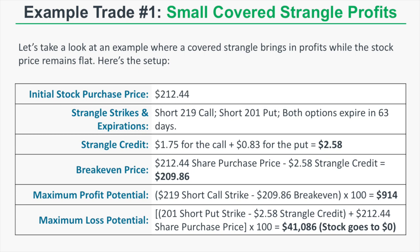In the first example, a covered strangle profits while the stock remains between the short strikes. The initial stock purchase price is $212.44. We sell the 219 call and the 201 put expiring in 63 days, collecting $1.75 for the call and $0.83 for the put, for a total strangle credit of $2.58.